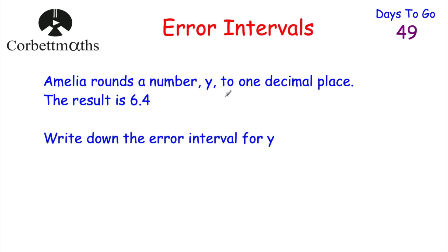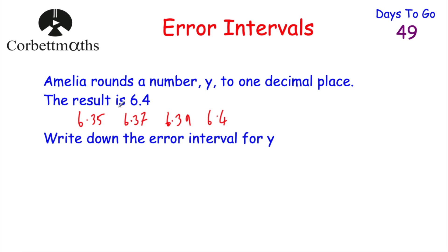Our next question says Amelia rounds her number y to one decimal place and her result is 6.4. Write down the error interval for y — press pause now to try it. So y has been rounded to one decimal place to give 6.4. It could be exactly 6.4, or numbers below such as 6.39 or 6.37. It could even be 6.35 because that rounds up to 6.4 to one decimal place, but it couldn't be 6.349 — that would round down to 6.3.